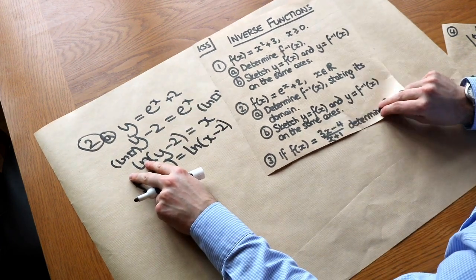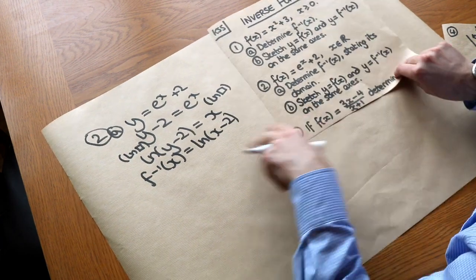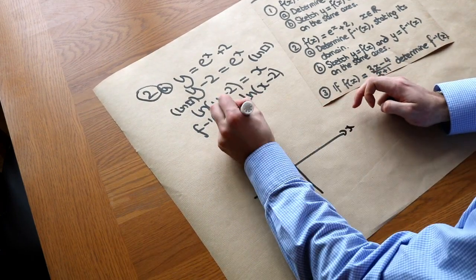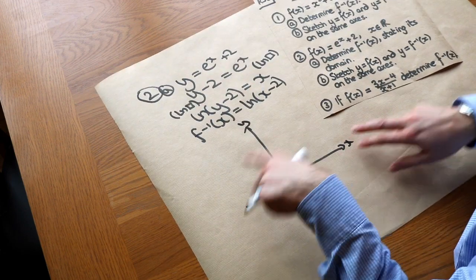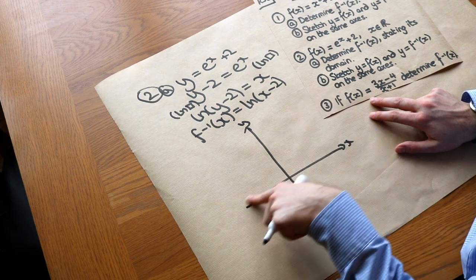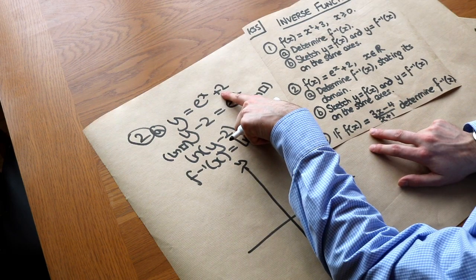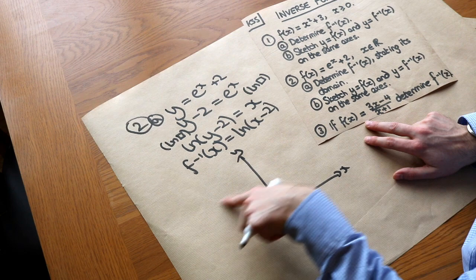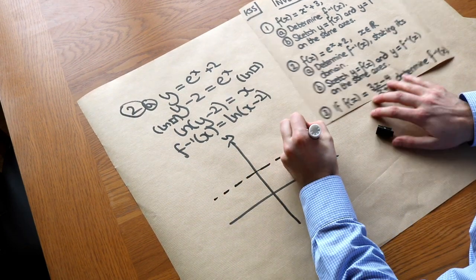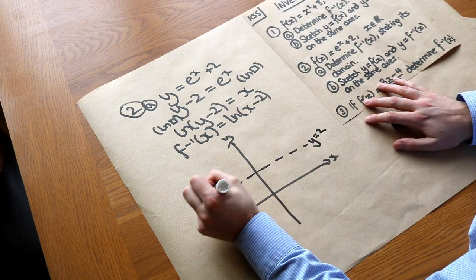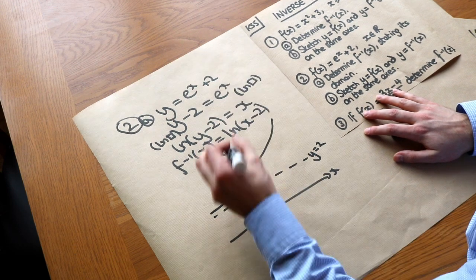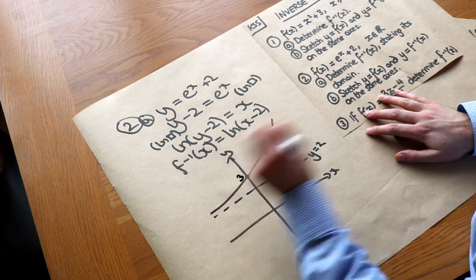We also want to sketch the original function and its inverse on the same axes. An e^x graph is a standard exponential — it looks like a plane taking off. When we add 2 to the y value, it shifts up by 2, so instead of an asymptote on the x-axis, the asymptote is now at y = 2. The y-intercept: when x = 0, e⁰ = 1, plus 2 gives 3, so the y-intercept is 3.